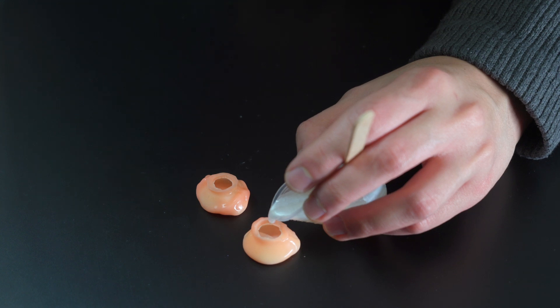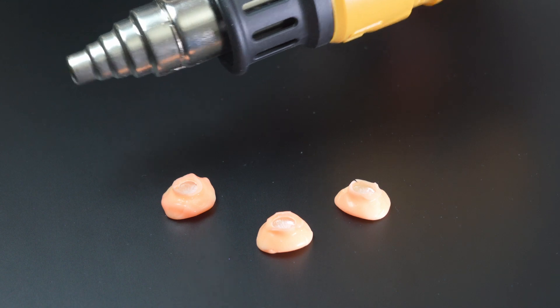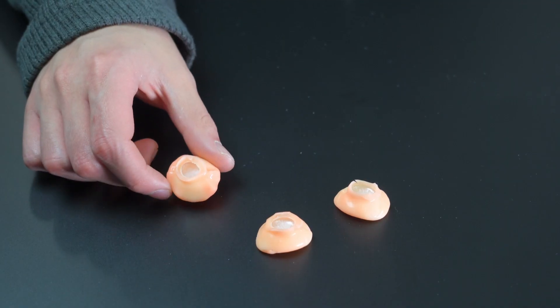Now that we have filled the molds, we will hit it with a heat gun so that we can get rid of all the bubbles. Alright, now we just wait for this to set.